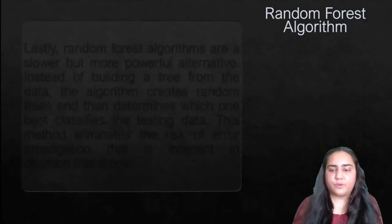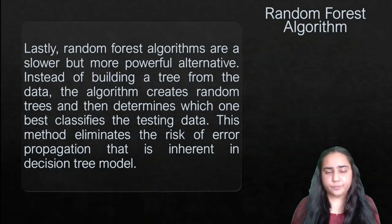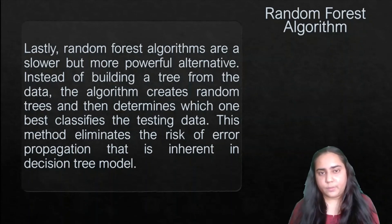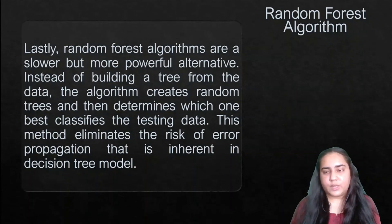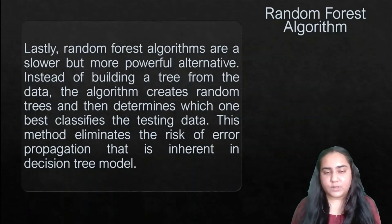Lastly, we have the random forest algorithm — a slower but more powerful alternative to decision trees. Instead of building one tree from the data, this algorithm creates many random trees and then determines which one best classifies the testing data. It eliminates the risk of error propagation inherent in decision tree models. It creates many trees, finds the best fit among them, and while it is slower, it reduces errors significantly.